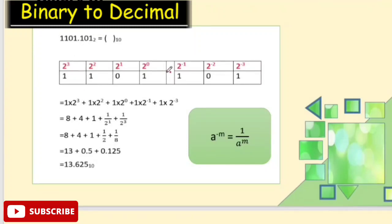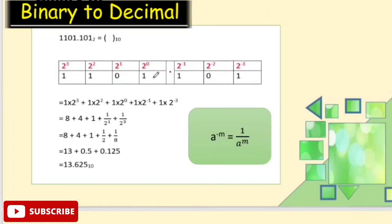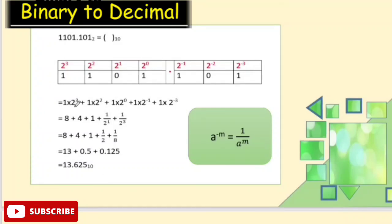For a binary number with a decimal point, the digits on the left-hand side have positive powers starting from 2 to the power 0, and on the right-hand side the powers are negative: 2 to the power minus 1, 2 to the power minus 2, and 2 to the power minus 3. So for the number 1101.101: 2 to the power 3 is 8, multiplied by 1 gives 8. 2 to the power 2 is 4, multiplied by 1 gives 4. 2 to the power 0 is 1, multiplied by 1 gives 1.